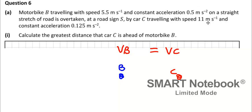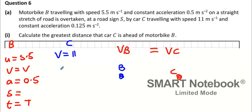Using UVAST, for the bike: U equals 5.5, velocity is V, acceleration is 0.5, S value we do not know, and T value we do not know. For the car: U is 11, velocity is V which is the same as the bike, acceleration is 0.125, distance we don't really know, and time is the same as the bike.